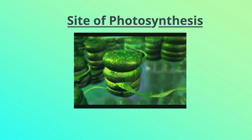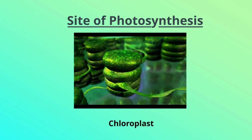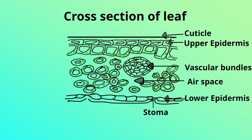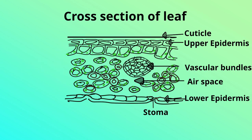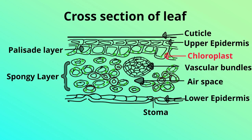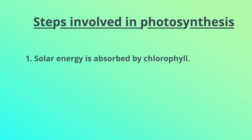Chloroplasts are the site of photosynthesis. These chloroplasts are the green-colored plastids present in leaves. When we look into the cross-section of a leaf, the middle layer contains photosynthetic cells called mesophyll cells. The mesophyll region is divided into two layers: the palisade layer and the spongy layer. Numerous chloroplasts are present in these mesophyll cells, containing a green pigment called chlorophyll which absorbs solar energy.